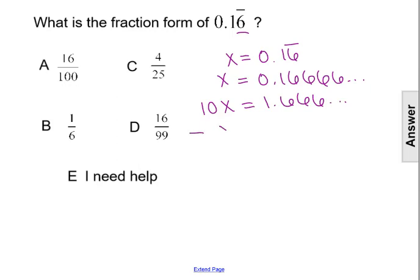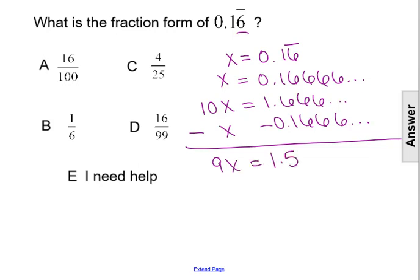We can then subtract x from both sides, which is subtracting x from the left. Since we know that x equals 0.16666, we'll subtract that from the right. That gives us 9x equals 1.5. We've removed the repeating part of the decimal from the equation.